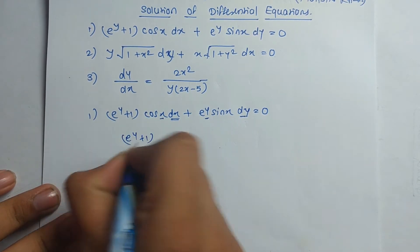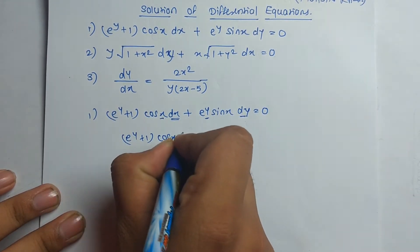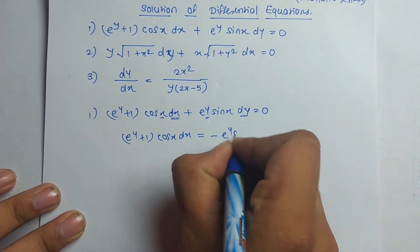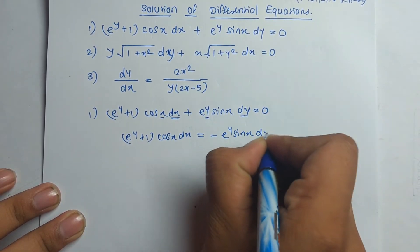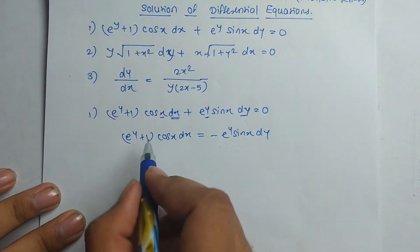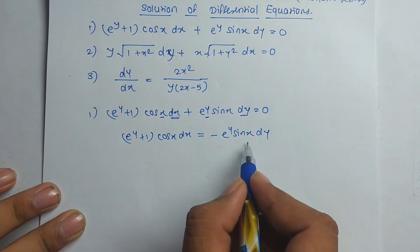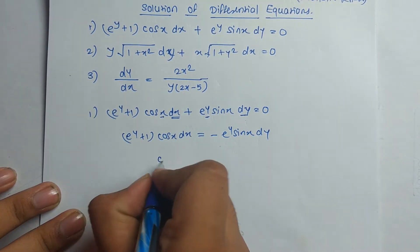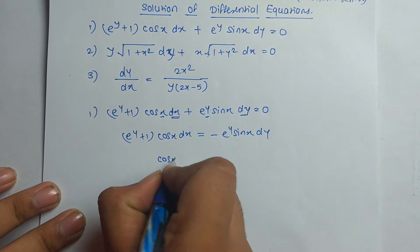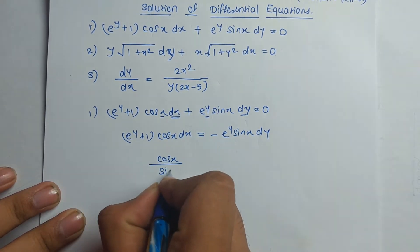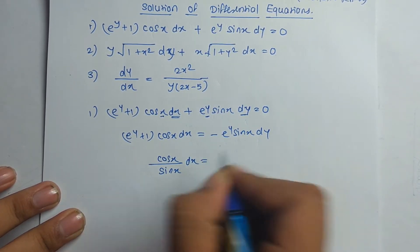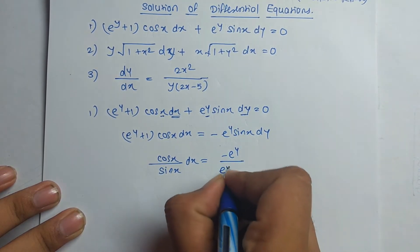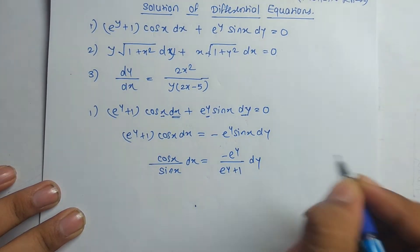So the equation becomes: (e^y + 1)cos(x)dx = −e^y·sin(x)dy. Now I move the y term to the right-hand side and the sin(x) term to the left-hand side. The equation becomes: cos(x)/sin(x) dx = −e^y/(e^y + 1) dy.